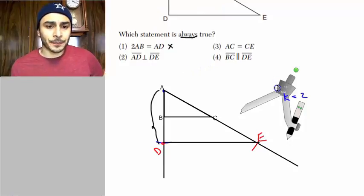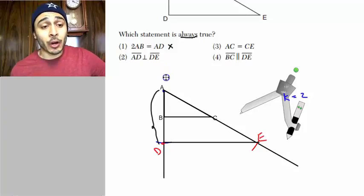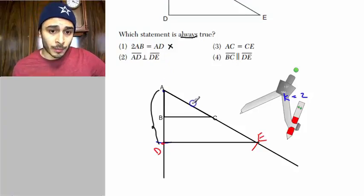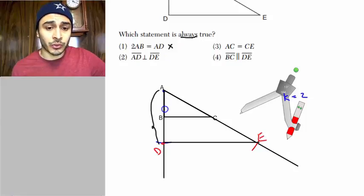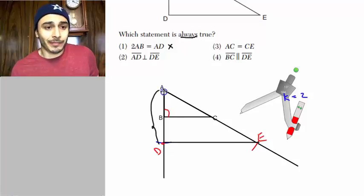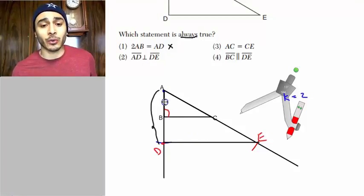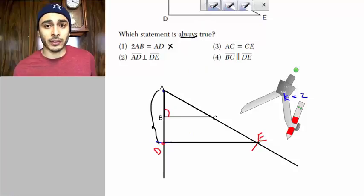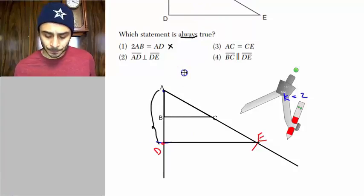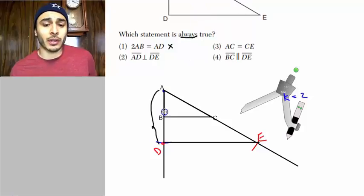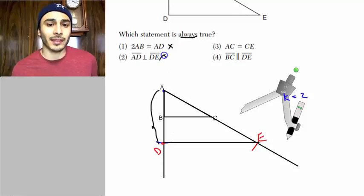Option 2 says AD is perpendicular to DE. Well, in order for that to be true, we need a right angle to start off with. This had to be 90 degrees. And then, extending it, you'd get another 90 degree angle here, going through the dilation with the compass. However, that's not the case. They never told you that this was 90 degrees. So I'm actually just going to erase that so as to not confuse you. We were never told this was 90 degrees, so therefore we cannot say that this will be 90 degrees as well. So that's not always true.